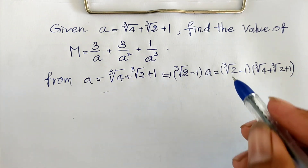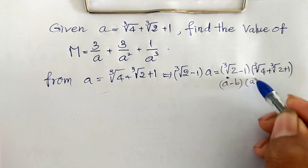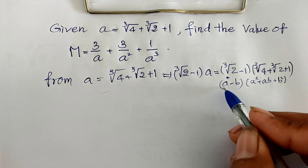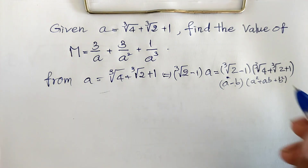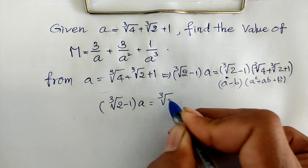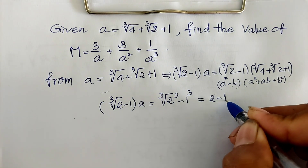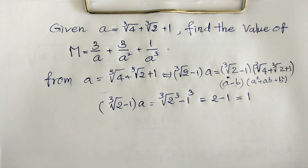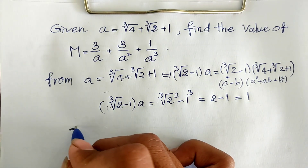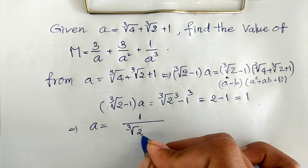We use the rule that a minus b, multiplied by a squared plus a·b plus b squared, equals a cubed minus b cubed. So we get: cube root of 2 minus 1, multiplied by A, equals cube root of 2 to the power 3, minus 1 to the power 3, which equals 2 minus 1, which equals 1. So now moving cube root of 2 minus 1 to the right side, we get A equals 1 divided by cube root of 2 minus 1.